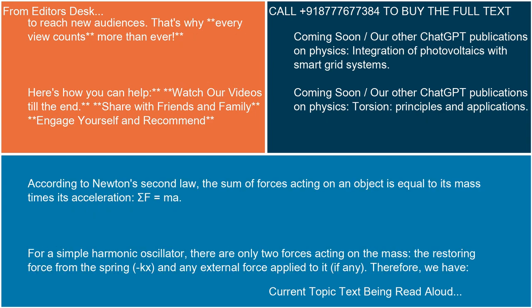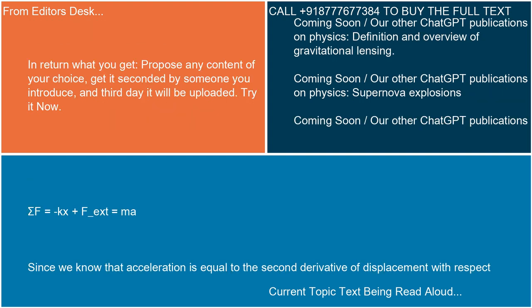According to Newton's second law, the sum of forces acting on an object is equal to its mass times its acceleration: sigma F equals ma. For a simple harmonic oscillator, there are only two forces acting on the mass — the restoring force from the spring, kx, and any external force applied to it, if any. Therefore, we have sigma F equals kx plus F(t) equals ma.